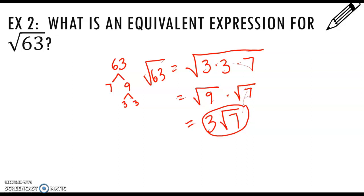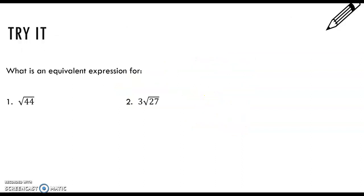We have a preference in math for not having any perfect squares left inside our number. 7 is a number that doesn't have any perfect squares in it, whereas 63 has a 9 in it, which is a perfect square. Pause the video and try these two examples — make your factor trees and break it up. When you're done, restart the video and watch my solution.